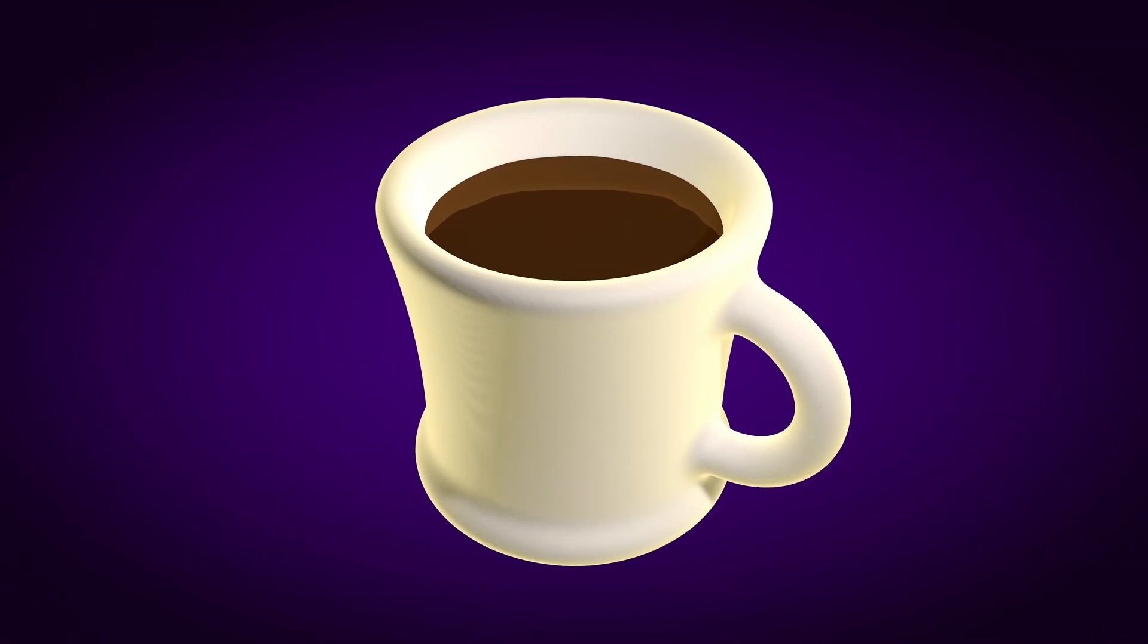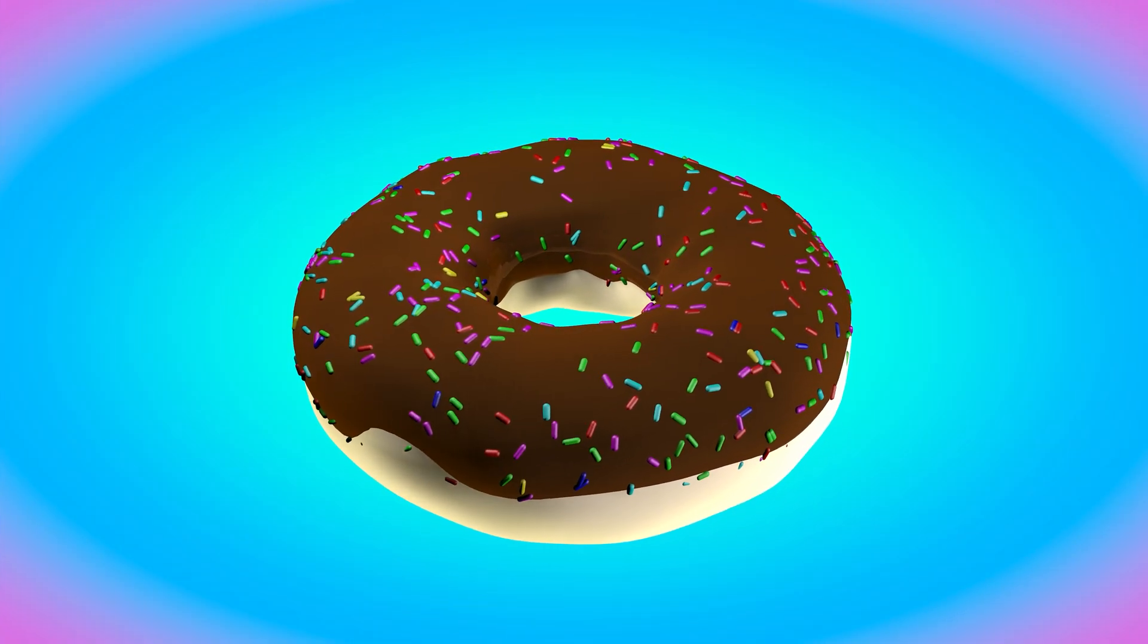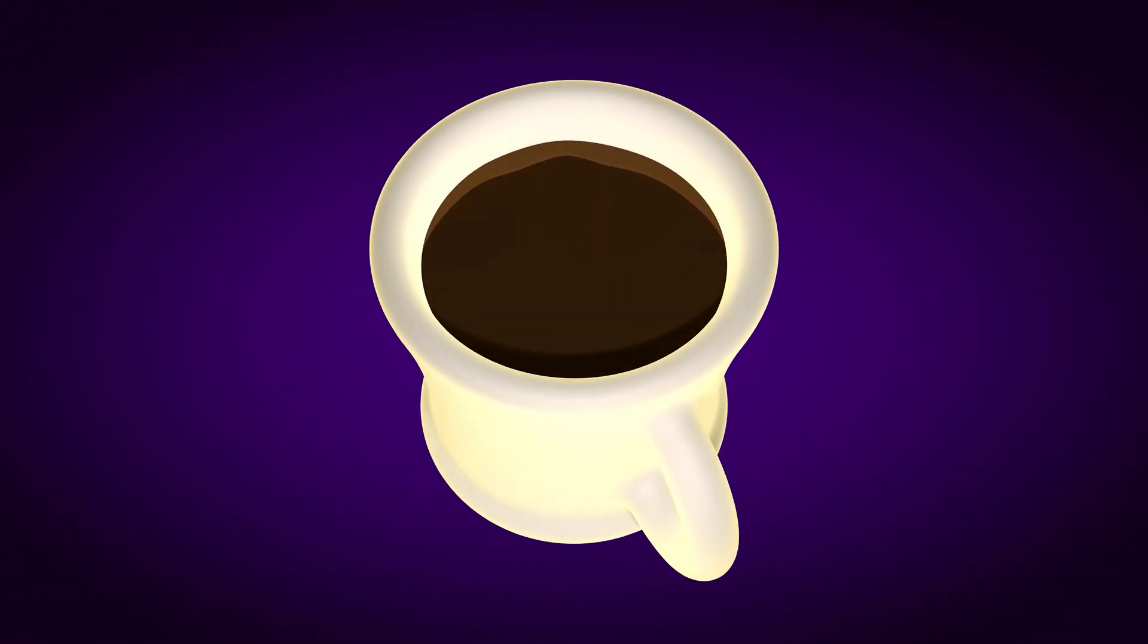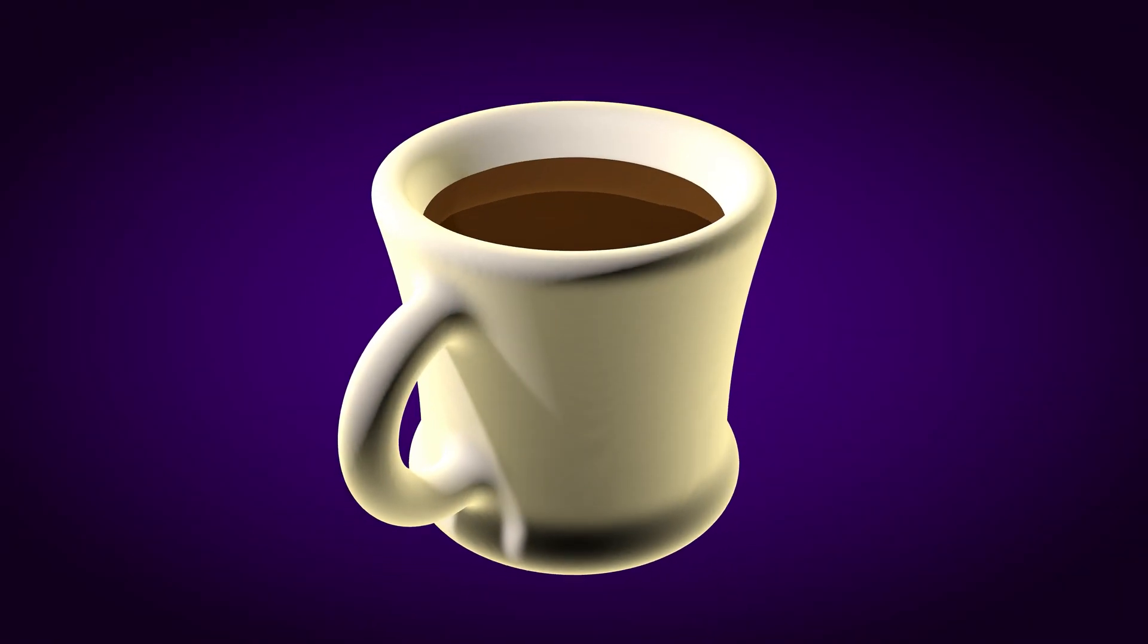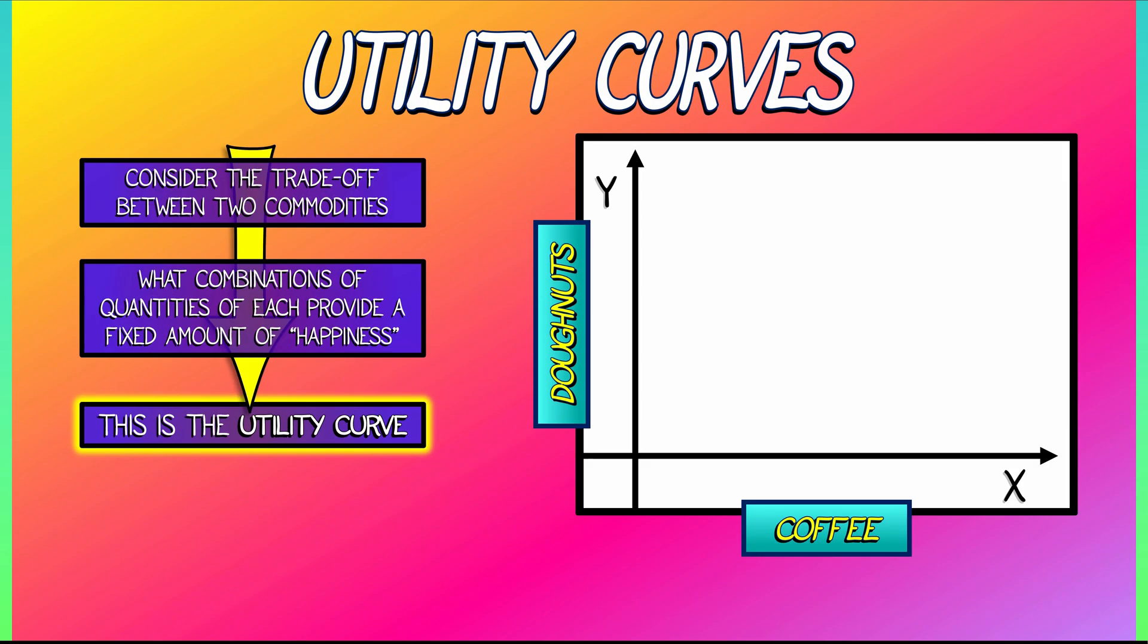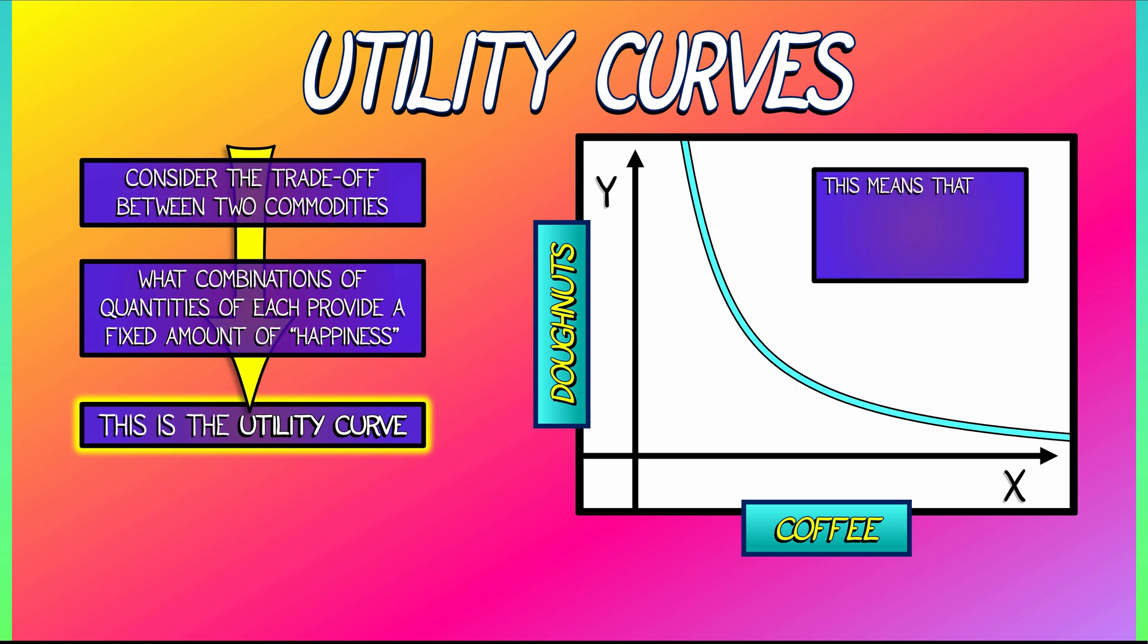Now I like coffee and I kind of like donuts as well, but I kind of like coffee more. I could live without donuts as long as I had coffee, but I might like some donuts too. The idea is that there's some curve in this XY plane that represents a fixed amount of happiness or a fixed amount of utility. I would be just as happy if I gave up some of my donuts in order to get some more coffee. The utility curve keeps track of that.